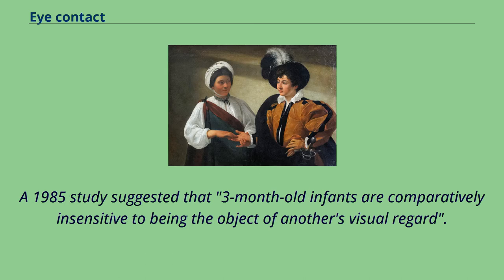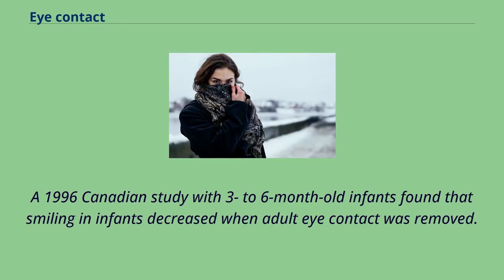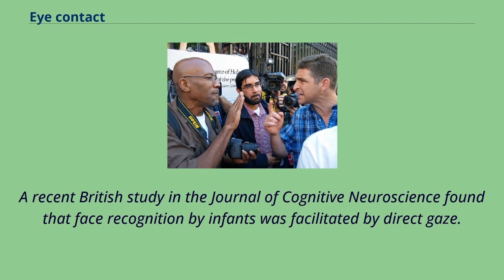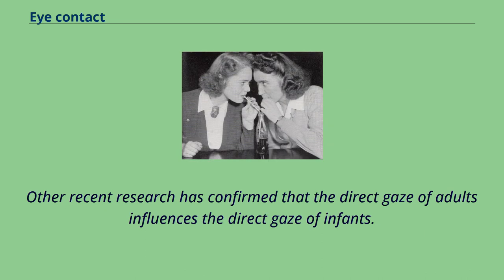A 1985 study suggested that three-month-old infants are comparatively insensitive to being the object of another's visual regard. A 1996 Canadian study with three- to six-month-old infants found that smiling in infants decreased when adult eye contact was removed. A recent British study in the Journal of Cognitive Neuroscience found that face recognition by infants was facilitated by direct gaze. Other recent research has confirmed that the direct gaze of adults influences the direct gaze of infants.